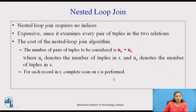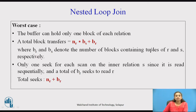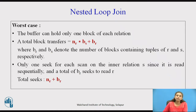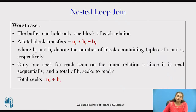A complete scan of S is done for every record of R. Assuming a buffer can hold only one block: all blocks of R are brought to memory only once, requiring b_r block transfers. For every tuple of R, the complete relation S is scanned, so n_r × b_s block transfers are required for S. Total block transfers in the worst case = n_r × b_s + b_r.